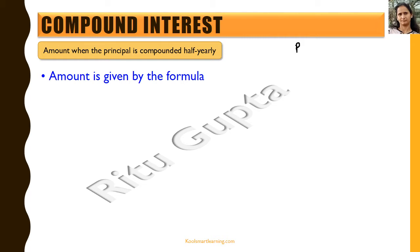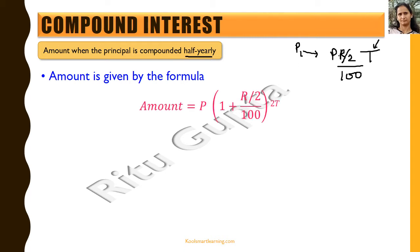Suppose P is the principal deposited initially. Now after 6 months, which is after half a year, the interest is calculated which becomes P into r by 2 by 100. In this case, if r is the rate of interest per annum, you get half the rate of interest for half a year. The time t here is in terms of number of 6-month periods, so for 1 year it becomes 2.